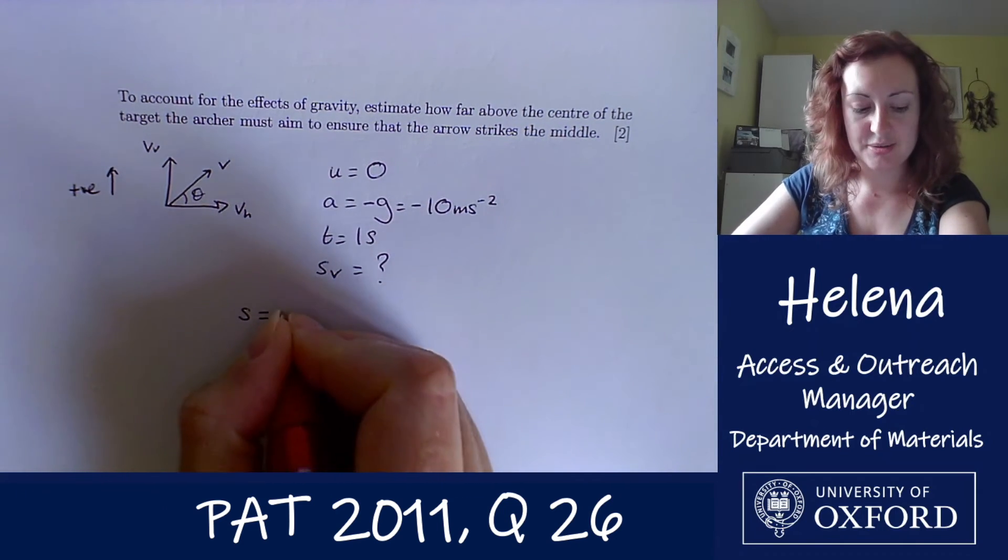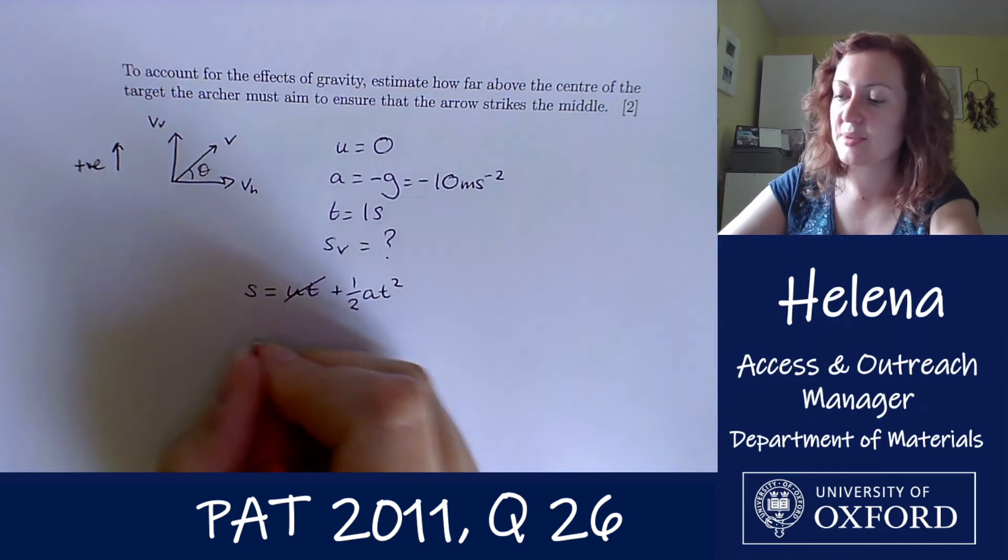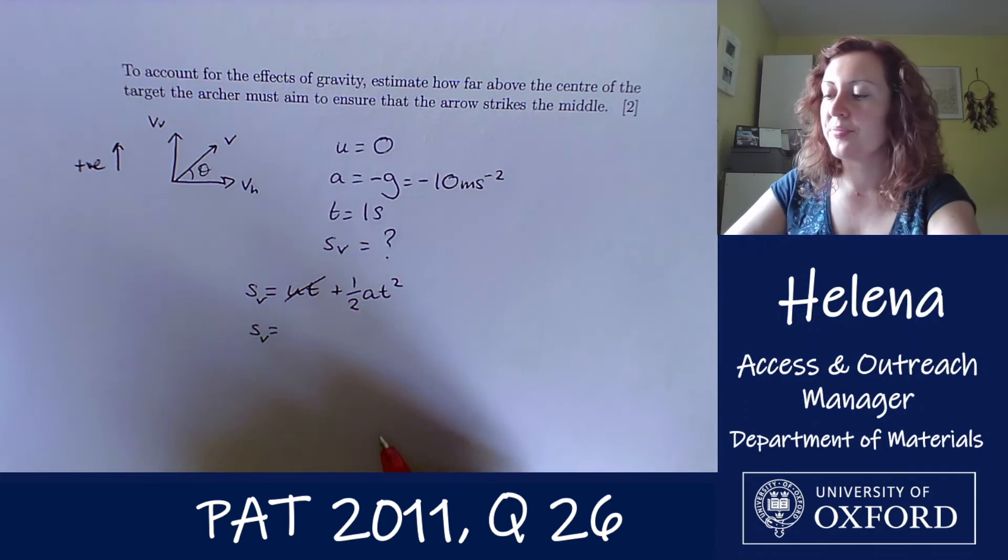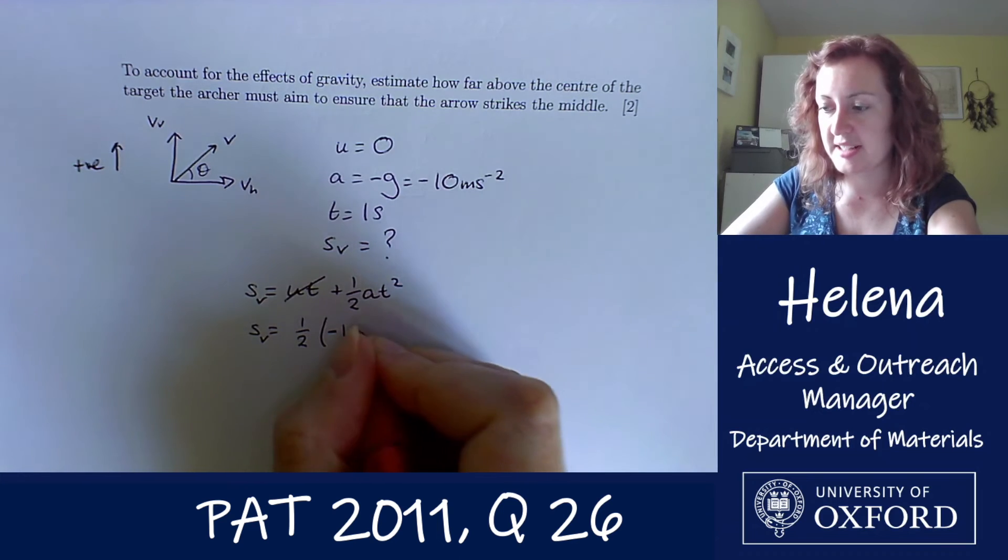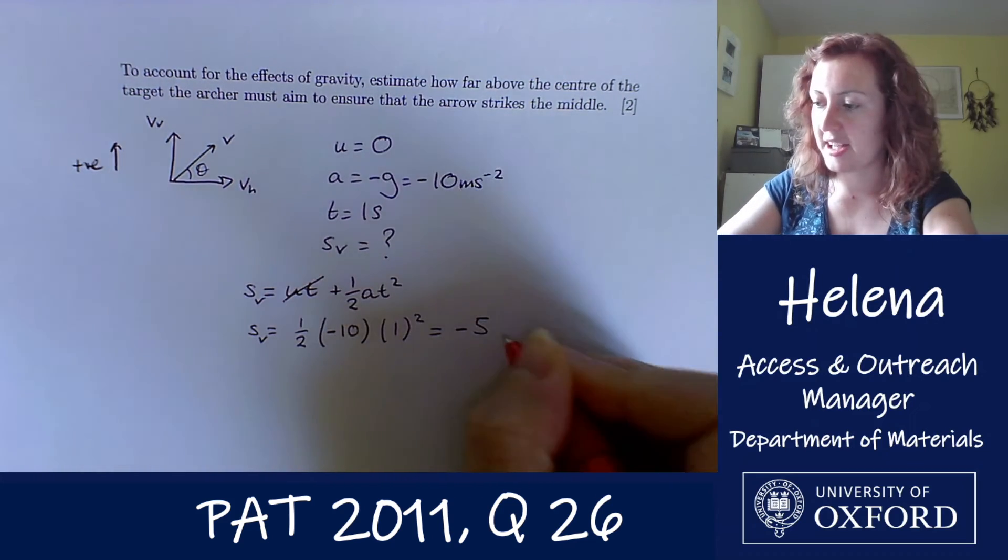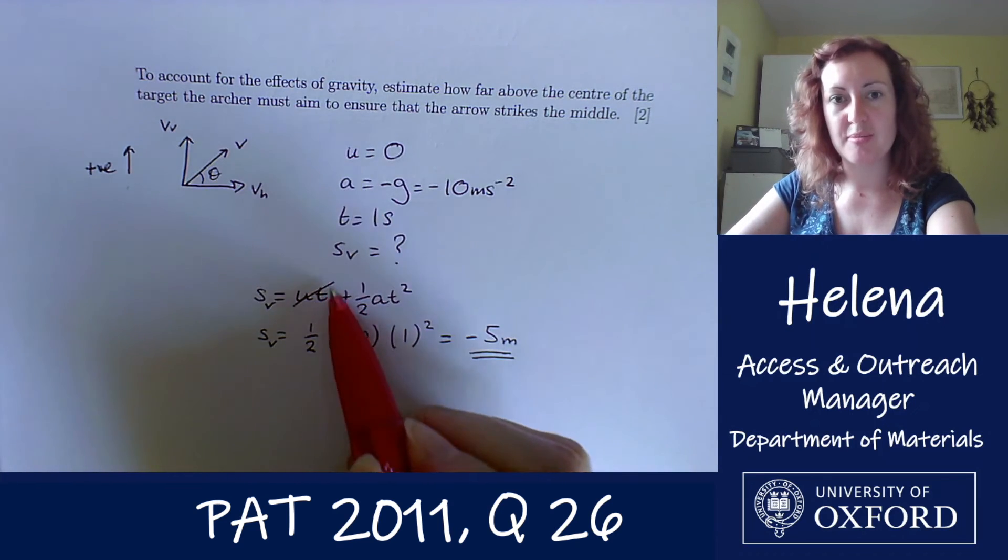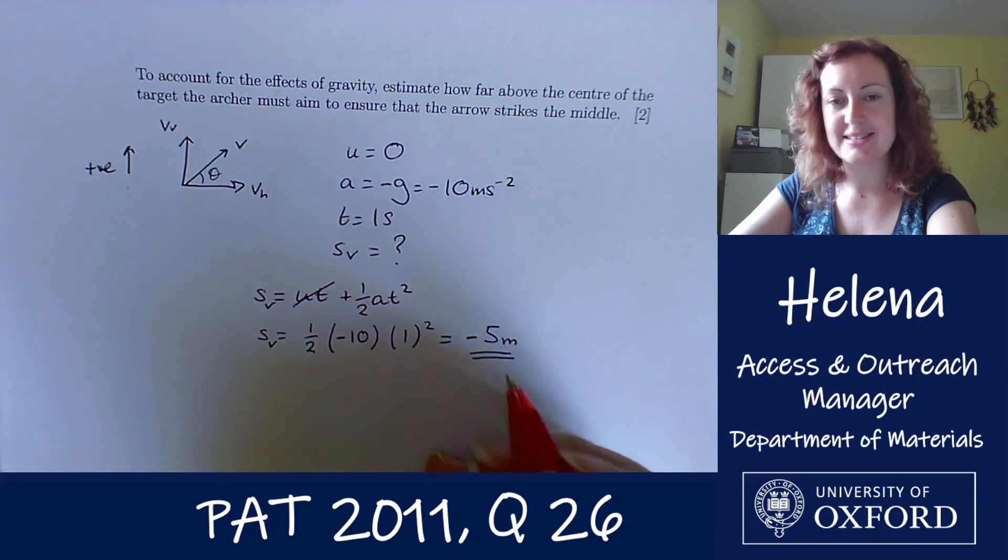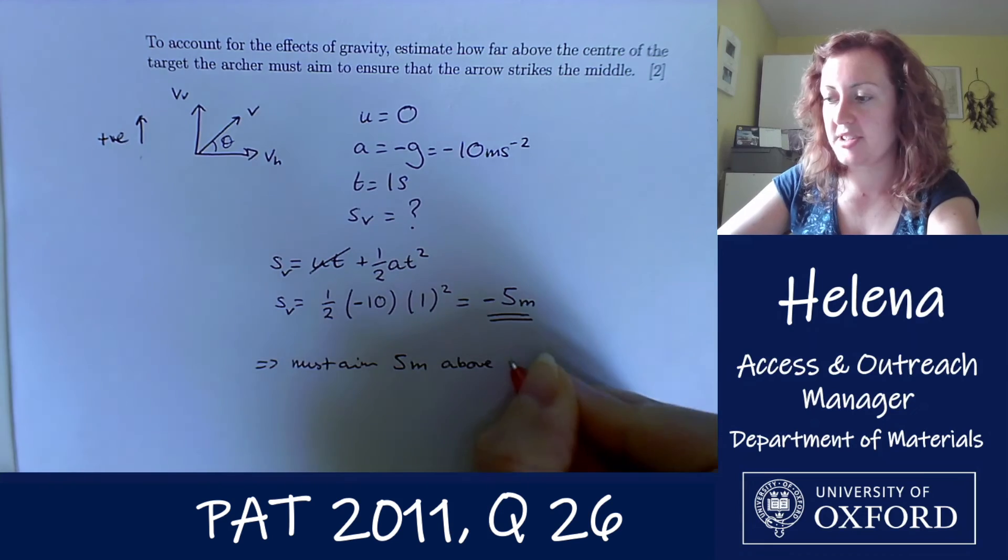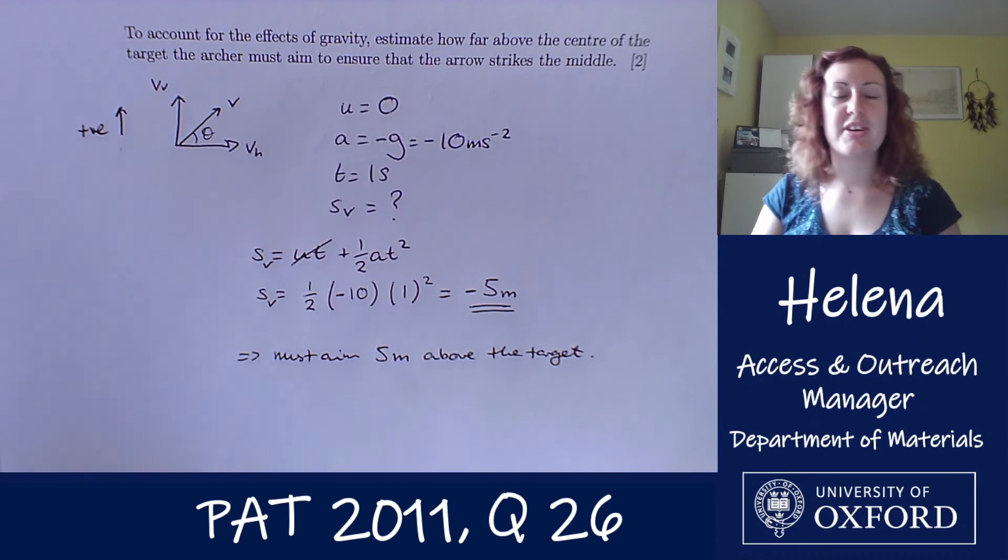So what equation can we use for this? We can use the classic s equals ut plus half at squared here. The initial velocity is zero, so we can get rid of that. So we know that the distance traveled is the half at squared. So that's the vertical distance traveled. So let's put in our numbers. We have a half times the acceleration due to gravity, which is minus 10 times the time, which is one squared. So we have the vertical distance is minus five meters. So remember how I defined the positive direction as upwards. So this means that the arrow has moved five meters downwards while it's been flying through the air, which makes sense. So therefore, the archer must aim five meters above the target in order for the arrow to strike the center.